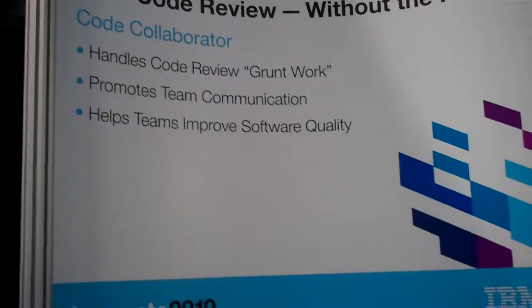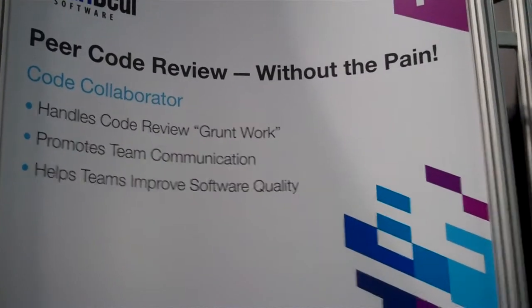I noticed something interesting on your sign-up here — you've got 'peer code review without the pain.' What exactly is that? What we've found is that if we can remove some of the friction, some of the grunt work from the process of doing peer code review — things like gathering up the correct files and making them available to everybody in the review, and facilitating the communication amongst developers about a problem line in a particular file, and if we can collect some metrics and make reports available on that — then by facilitating the process, you can make it a lot less painful, which increases the likelihood that developers will actually review their code.